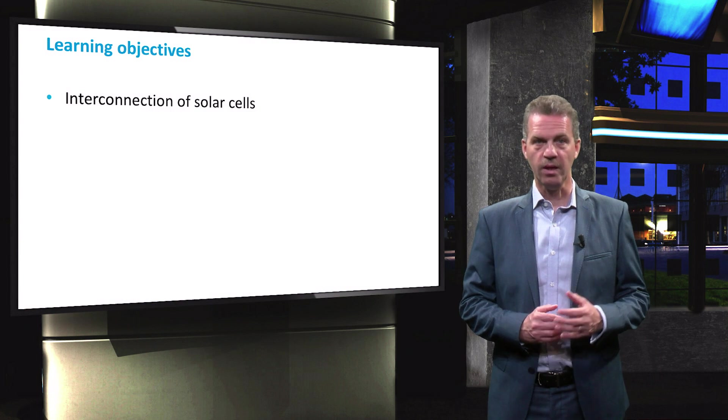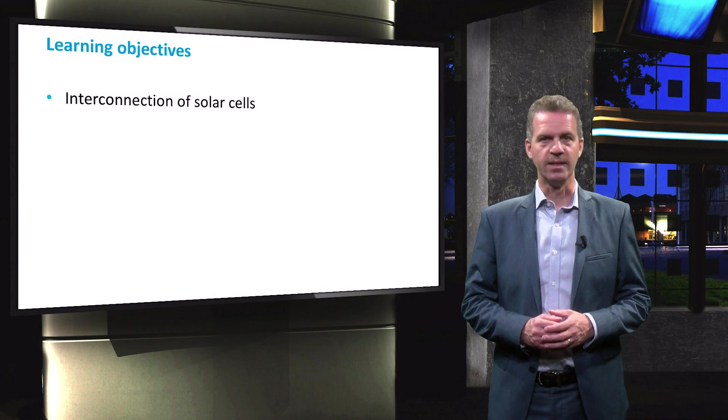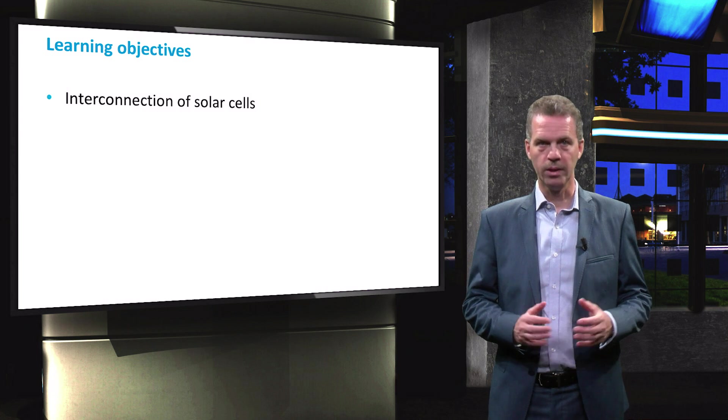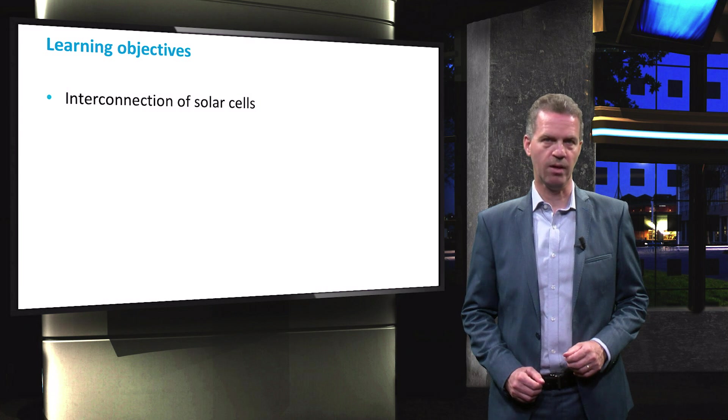In a solar module, the individual cells are interconnected in a circuit. Cells can be placed in series, in parallel or in a combination of both. This will affect the voltage and current output of the module.